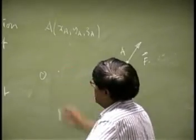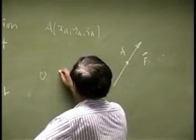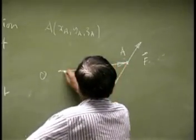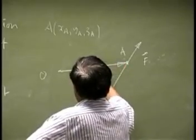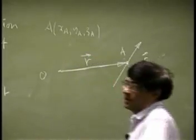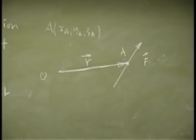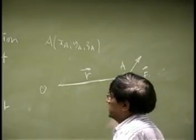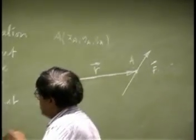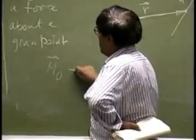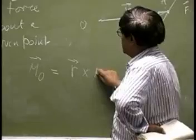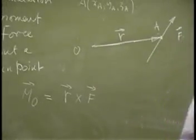And, what you're going to do is, you're going to draw a position vector from O to A. And let's call this as R. So, point O is known, the point A is known, and you're drawing a vector from those two points. Then, the moment vector, MO, is simply defined as R cross F. That means, you take the position vector R, you take the force vector F.